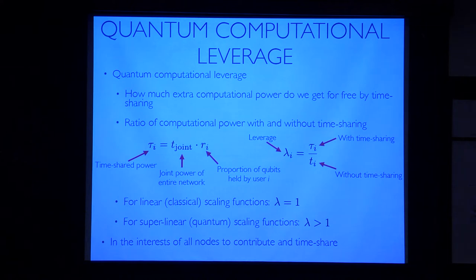And so this factor λ effectively tells us how much computation we get for free by contributing our resources to the network and timesharing the resources. Now for classical computers this function is always one—it makes no difference—but for quantum computers it's always greater than one. And it doesn't matter how many qubits you contribute to the network, whether you're a small player with one qubit or a massive player with most of the qubits, it's always strictly greater than one. In other words, it's strictly in the interests of all nodes to always contribute to a global network and timeshare rather than use your computers independently.